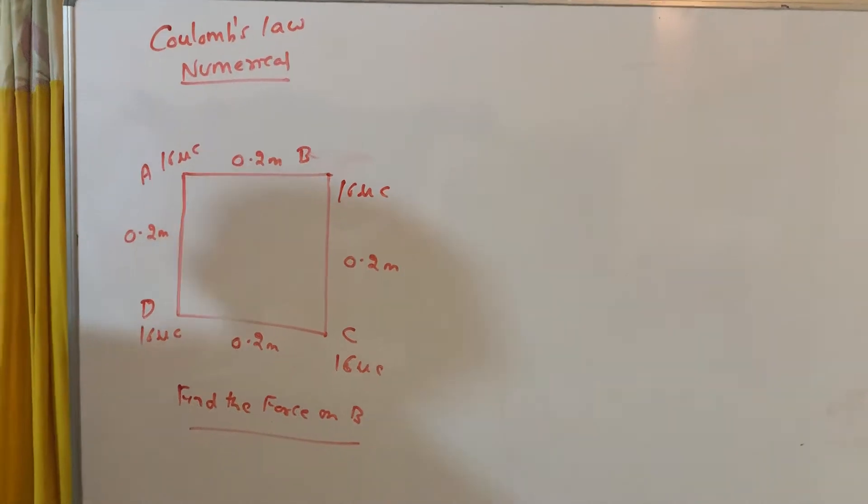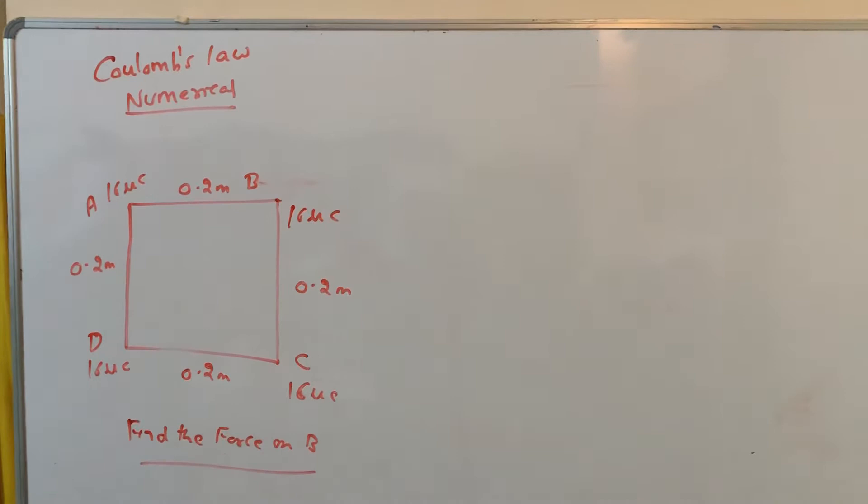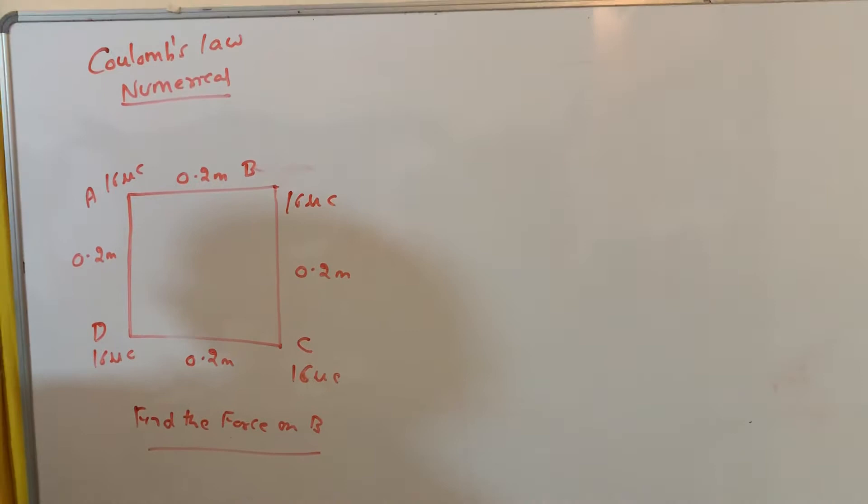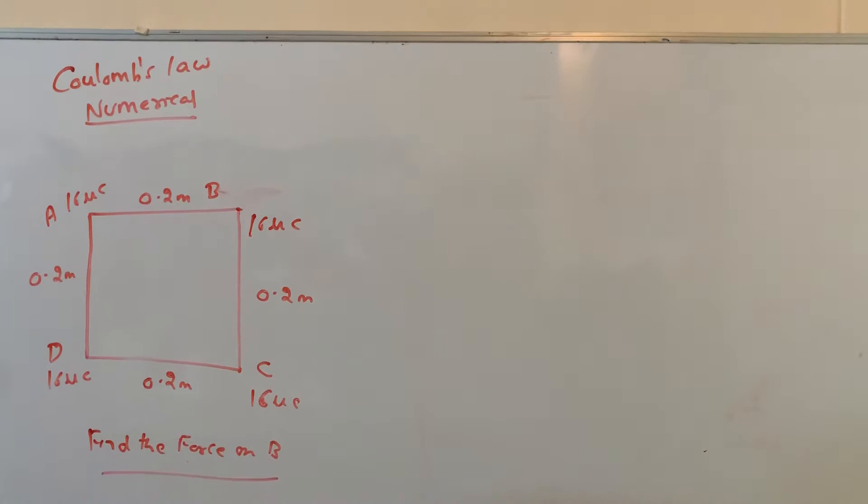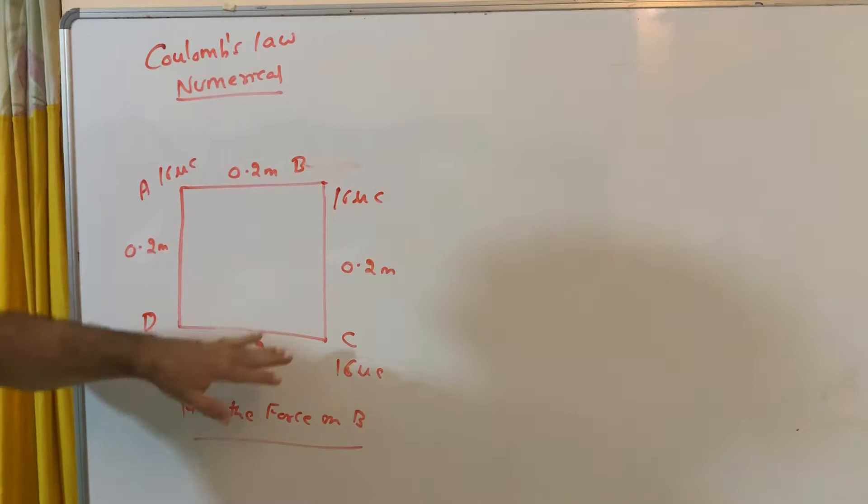Good evening kids, let us solve another type of problem in Coulomb's law. You have that force between two charges, force between three charges in a triangle. Now these are four charges given to you. The question is find the force on B. So depending on whatever question they will give you, you can find. This is 16 microcoulomb.